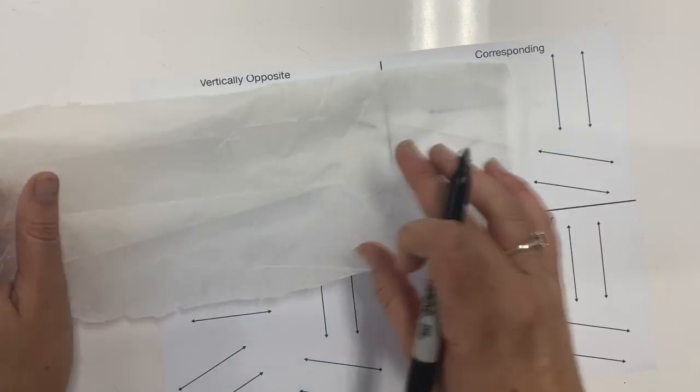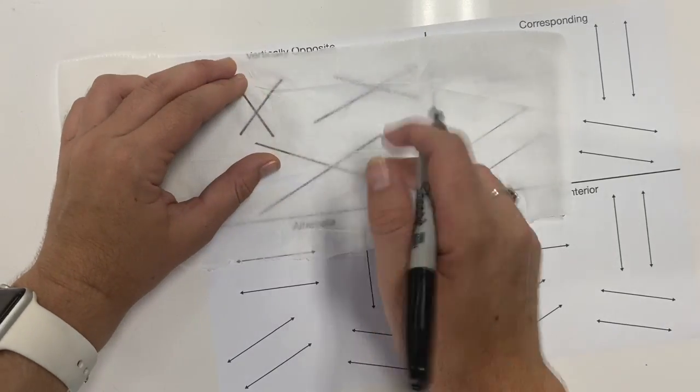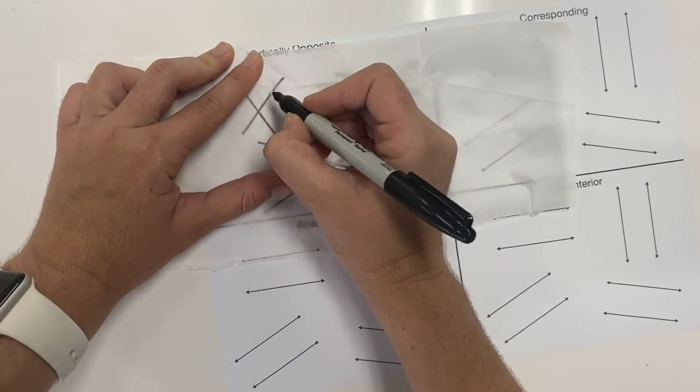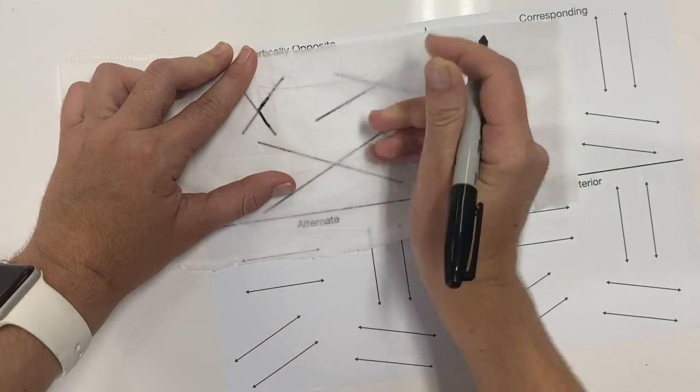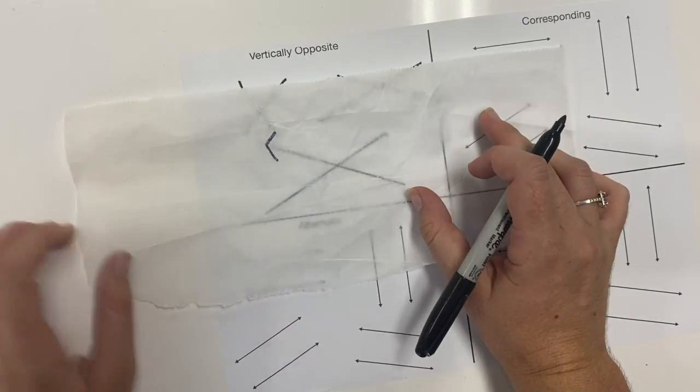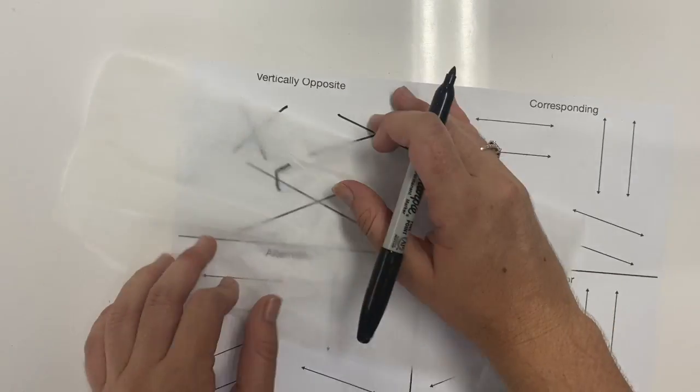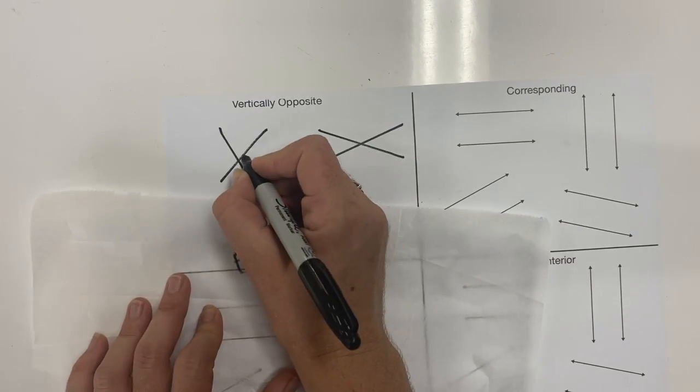Now we take the baking paper, put it over it, and then trace the angle here. A different color could be good. Now we've got the size of this angle. If I now turn it around,